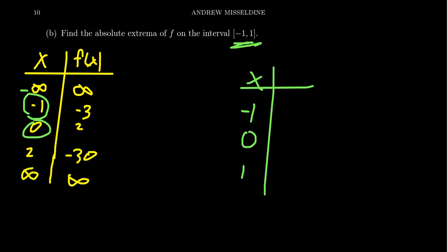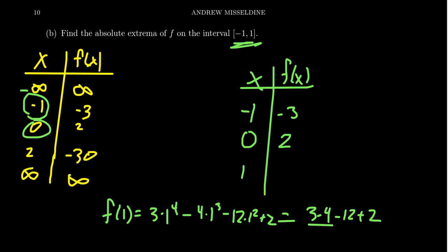Some of these we already did. We're going to put this into the function. Don't put this into the derivative. Put this into the function. f of negative 1 was negative 3. f of 0 was equal to 2. We haven't done f(1) yet. So plugging that back into our function, f(1) turns out to be 3 times 1 to the 4th minus 4 times 1 cubed minus 12 times 1 squared plus 2. Because we're just taking powers of 1, this will just look like 3 minus 4 minus 12 plus 2. So 3 minus 4 is negative 1 plus 2 is positive 1, minus 12 is negative 11.